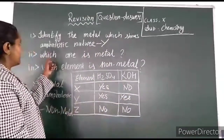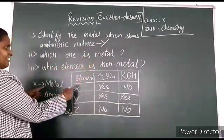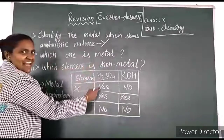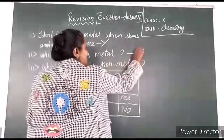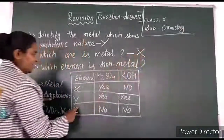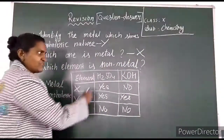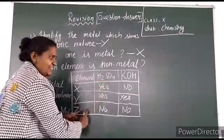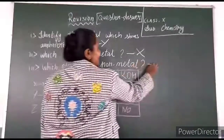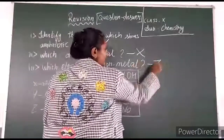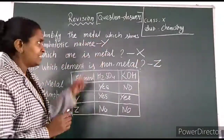The second question: which one is a metal? The element which reacts with the acid — that is X. X is a metal. Third question: which one is a non-metal? The element which does not react with the acid and does not react with the base — that is Z, a non-metal. This is the type of question that can be asked.